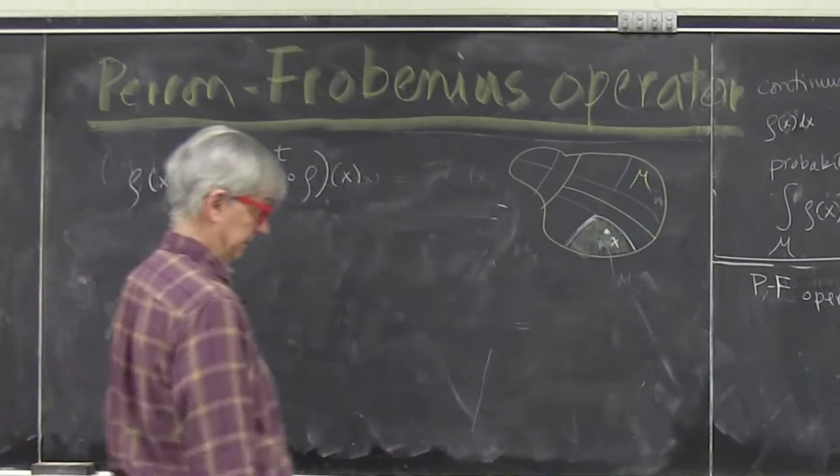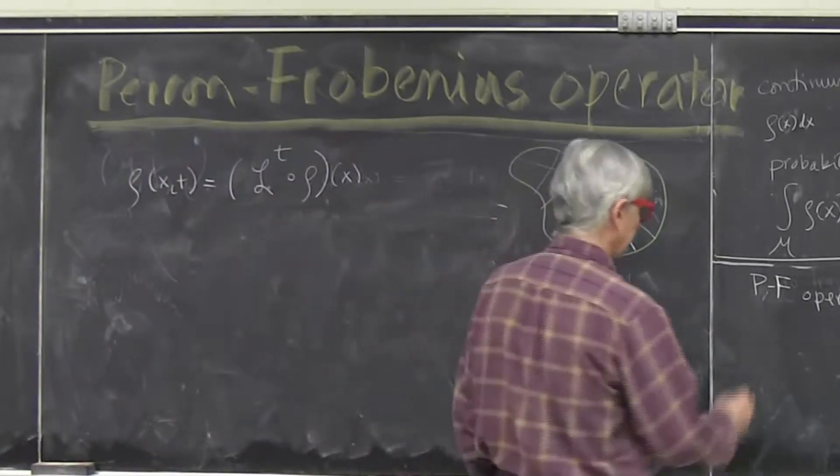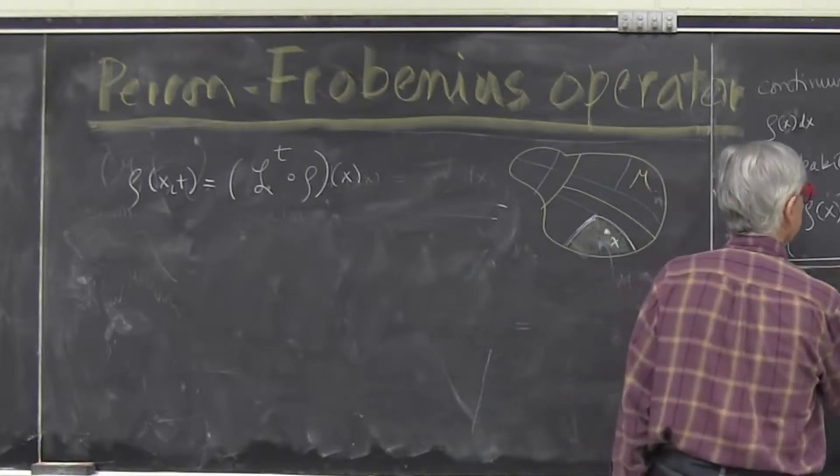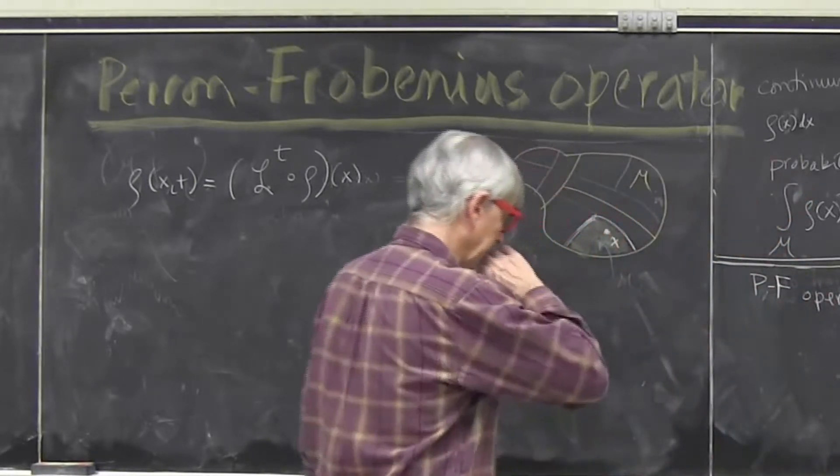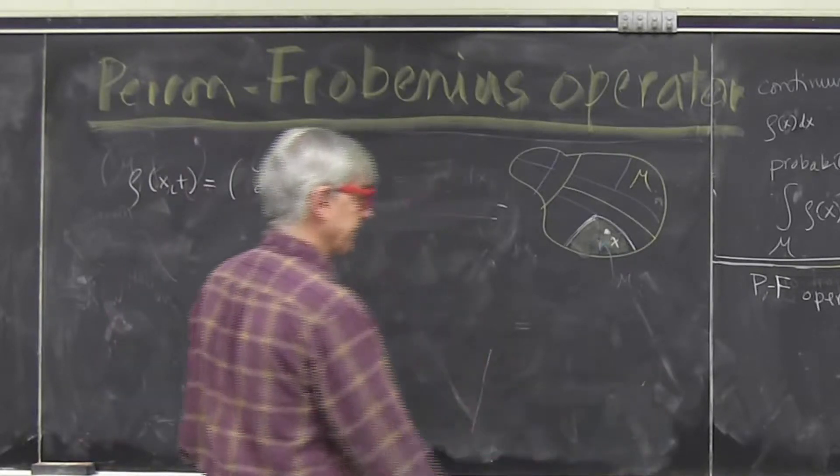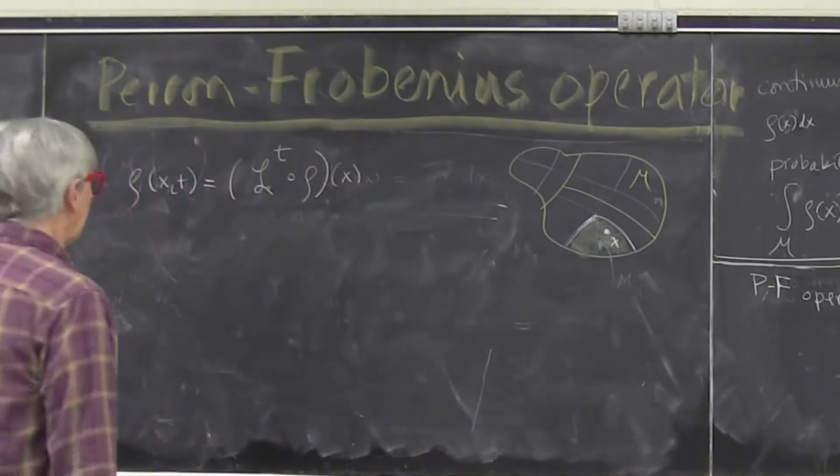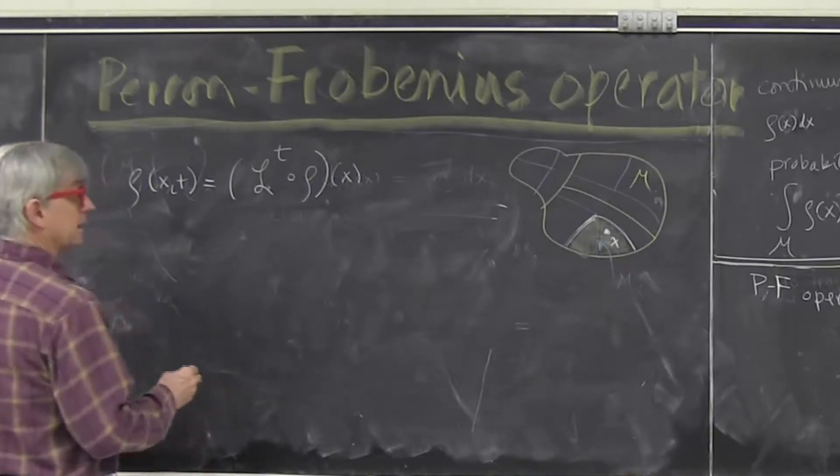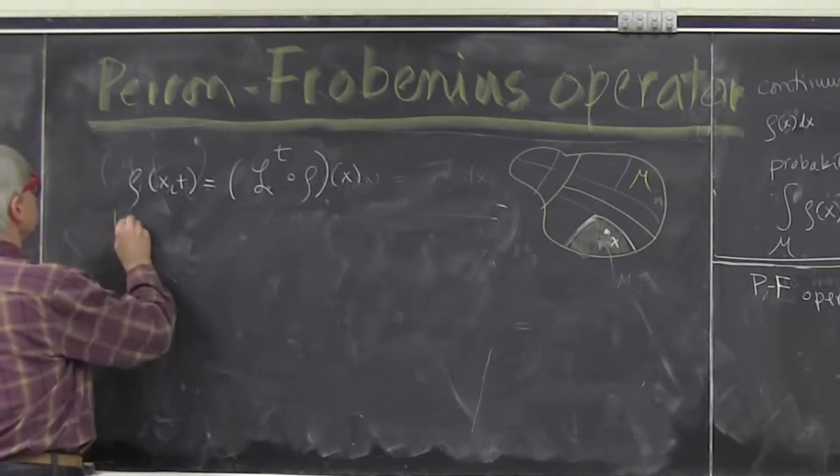It will not only derive equilibrium statistical mechanics, but also describes far from equilibrium mechanics where you're driving the system, you don't let it settle down. And the key notion is notion of invariant measure.